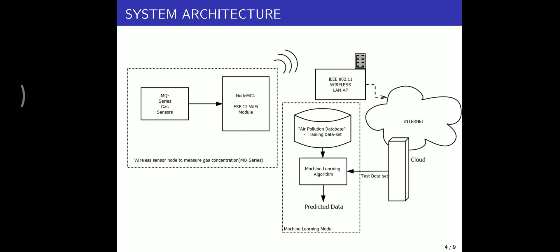This cloud acts as the test dataset for our machine learning algorithm which we use for prediction. Our machine learning algorithm is the decision tree algorithm. The air pollution database, the historical dataset, and the test dataset are given to the machine learning algorithm and we get the predicted data.